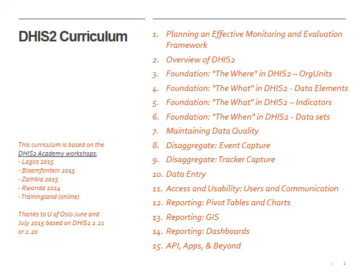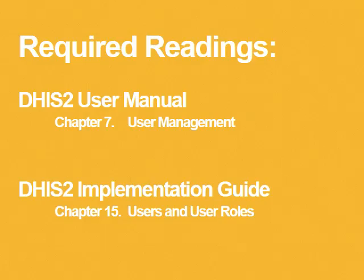This is the DHIS2 curriculum we've been developing at Logical Outcomes, and it's based on the Academy workshops you can see listed on the left hand side of the screen. In this video we're going to be looking at Users and User Roles. The required readings for this unit are Chapter 7 from the DHIS2 User Manual, as well as Chapter 15 from the DHIS2 Implementation Guide.